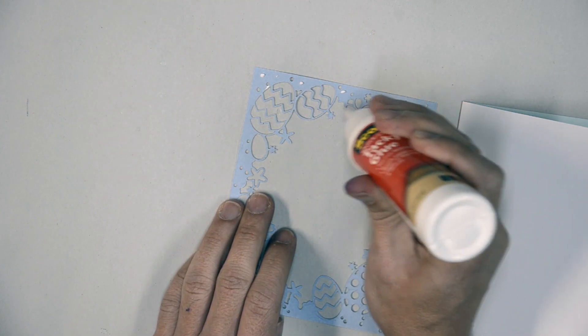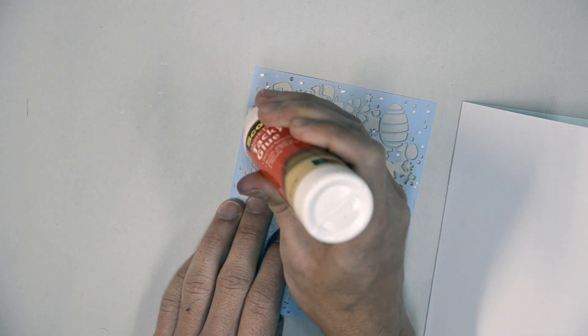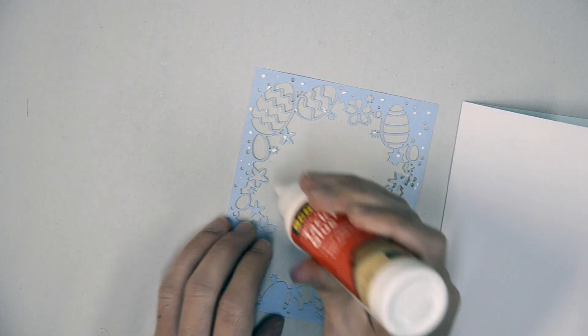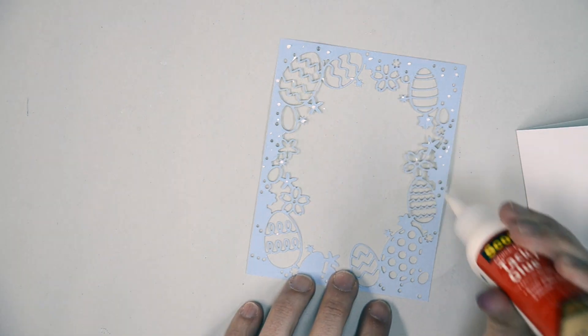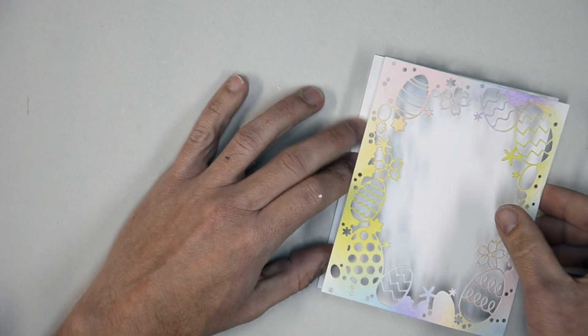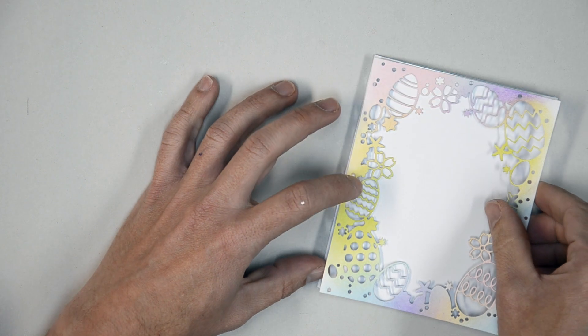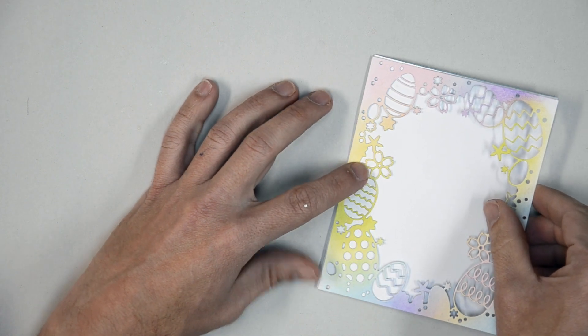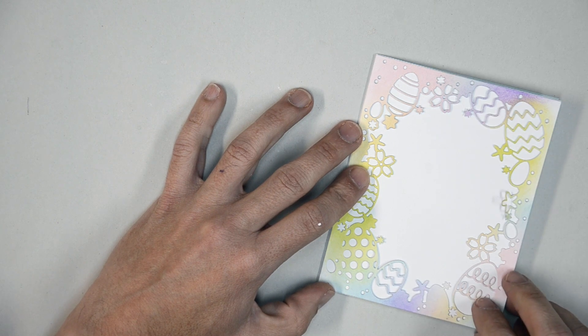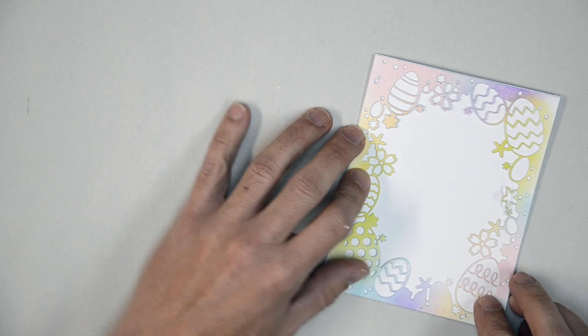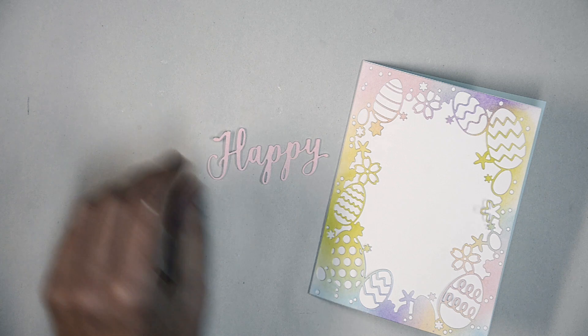Flip over the die cut to begin applying your adhesive. Again, glue is the best option here so you can get little bits of adhesive on the stripes and the flowers and the edges of this intricate die cut. I've cut a piece of white cardstock to four and a quarter by five and a half, standard A2 size. And I'm going to mount the die cut right on top of it, making sure that all four corners line up square.